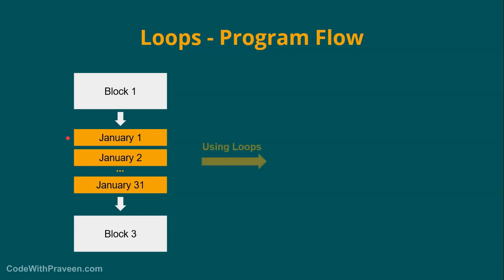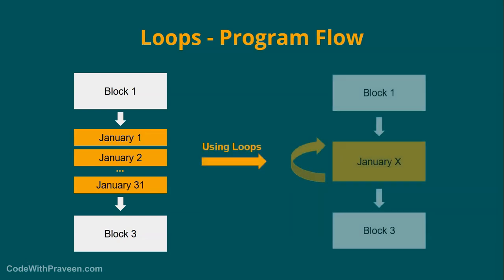Now the better approach is using the loops. This is the approach we can do when we use the loops. As you can see the program is very simple now. We have one statement called say January X where X represents a variable. So you print this and then you repeat the same set of statements multiple times by every time changing only the value of X. So that is what the loop actually does.